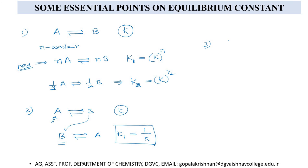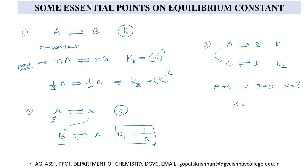Third point: suppose I have two equilibrium reactions — A giving B with equilibrium constant K1, and C giving D with equilibrium constant K2. If I have a combined reaction where A plus C gives B plus D, the equilibrium constant for this reaction is obtained by adding the two reactions. However, the equilibrium constant is not an additive quantity — it is a multiplicative one. So you multiply K1 and K2 to get the equilibrium constant for the combined reaction.